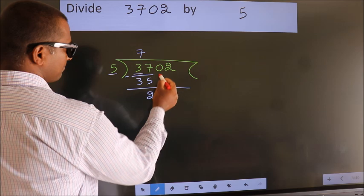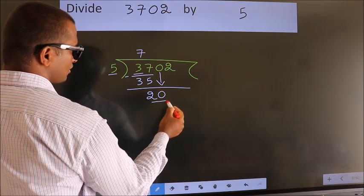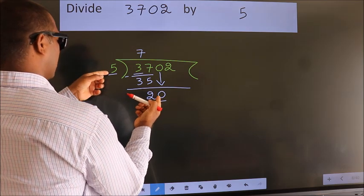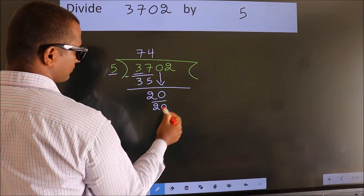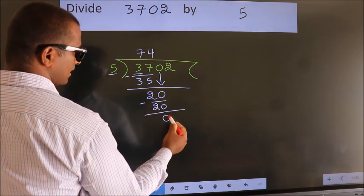After this, bring down the beside number. So, 0 down. So, 20. When do we get 20? In the 5 table. 5 times 4 equals 20. Now we subtract. We get 0.